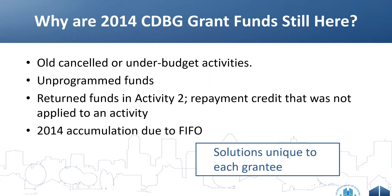To give context on why you're hearing about this expiration of 2014 CDBG grant years now: prior grants did expire, but because 2014 is the last year of the FIFO method, draws made against 2015 and later activities never went back to draw 2014 grant funds. So everything is coming to a head this year. Going forward, grants will continue to expire, but we do not anticipate nearly the scale or complexity that the end of this FIFO era has brought.